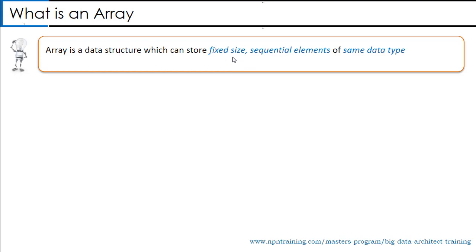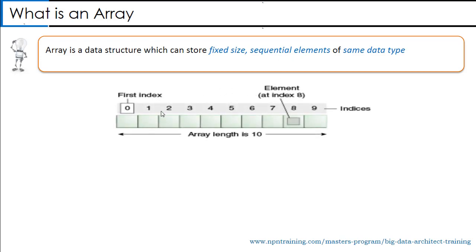The first point is fixed size — once an array is declared with a particular size, the size cannot be changed. The second point is sequential elements — arrays store a contiguous block of memory, meaning elements are stored one after the other. Third, same data type — arrays can only hold data of the same type.